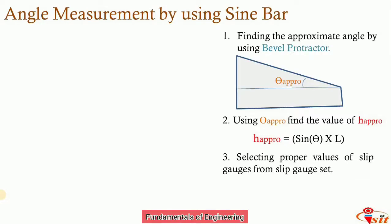Based on H_approx, select the appropriate number of slip gauges from the slip gauge set to build that height using the minimum number of slip gauges with exact values to achieve the specified length.